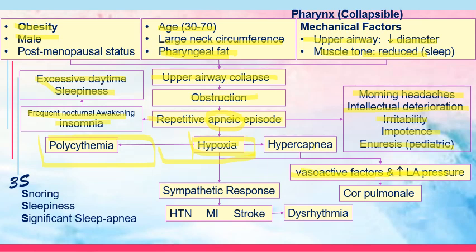If this continues, it results in a condition called cor pulmonale. In cor pulmonale, there are abnormalities in the right side of the heart due to abnormalities brought about by the lungs. For example, excess fluid in the lungs can backflow towards the right atrium, causing right ventricular hypertrophy — this is cor pulmonale, a cardiac manifestation resulting from pulmonary problems.